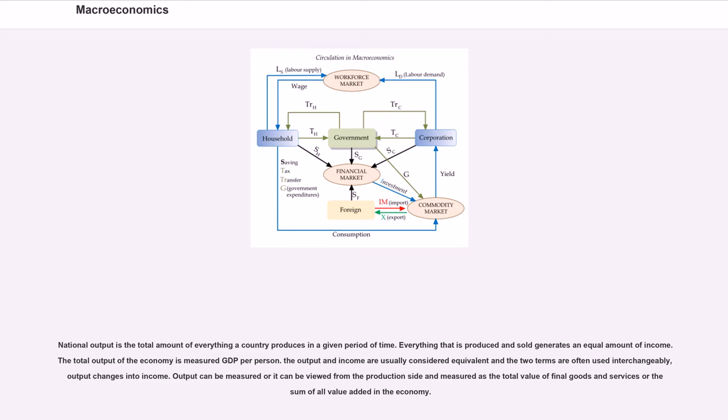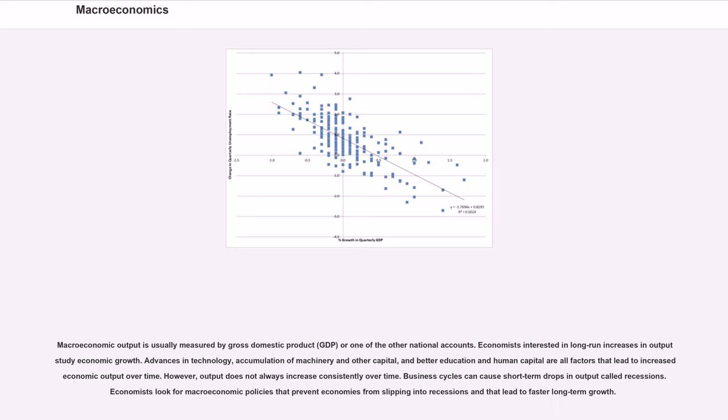The output and income are usually considered equivalent and the two terms are often used interchangeably. Output can be measured from the production side as the total value of final goods and services or the sum of all value added in the economy. Macroeconomic output is usually measured by gross domestic product, GDP, or one of the other national accounts.